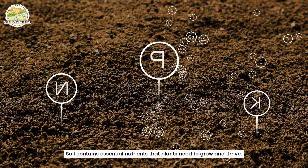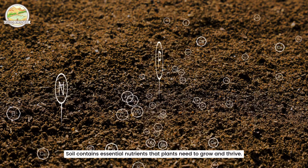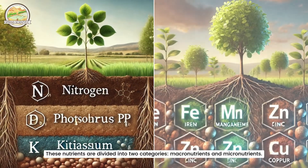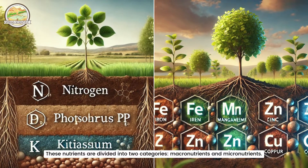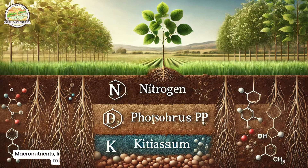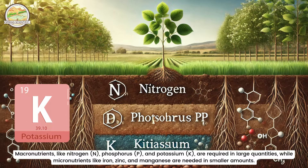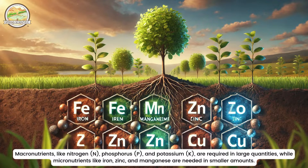Soil contains essential nutrients that plants need to grow and thrive. These nutrients are divided into two categories: macronutrients and micronutrients. Macronutrients like nitrogen (N), phosphorus (P), and potassium (K) are required in large quantities, while micronutrients like iron, zinc, and manganese are needed in smaller amounts.